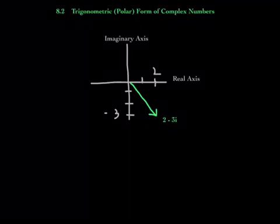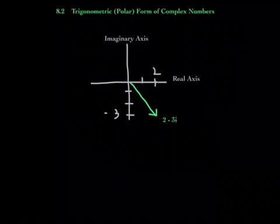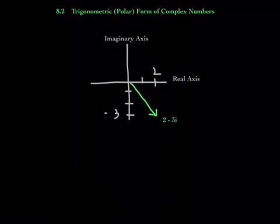Chapter 8, Section 2. This chapter might be my favorite chapter. We're going to be talking about complex numbers and their trigonometric form. Another word for trigonometric form is polar form.